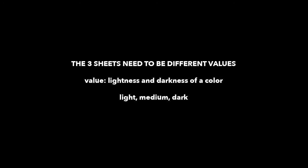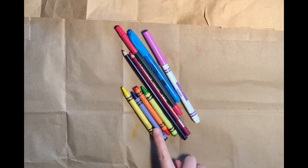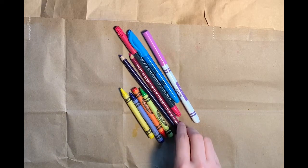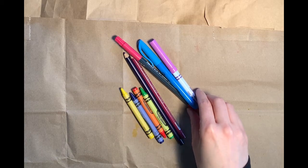Step two, completely color three sheets of paper. So the three sheets of paper need to be different values. Value means lightness and darkness of a color. So you need a light sheet, a medium sheet, and a dark sheet. And you can use whatever art materials you have for this. Crayons, colored pencils, markers, or even watercolors if you have them.